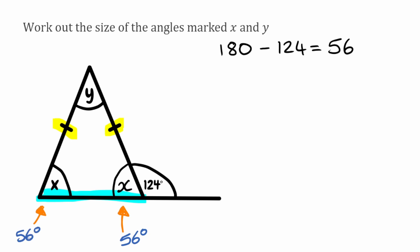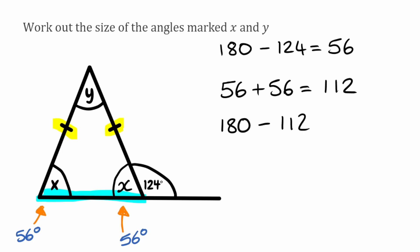Now that we know those two angles at the bottom, we can figure out the angle for y. We know all angles in the triangle must add up to 180. Adding together the two angles of 56 degrees gives us 112. So we take the total of 180, take away 112, and that gives us 68. So our final answer for angle y is 68 degrees.